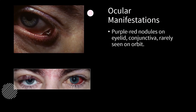Clinical presentations are purple-red nodules that develop on the eyelids or conjunctiva, and are rarely seen in the orbit. In early stages, Kaposi's sarcoma may be mistaken for a subconjunctival hemorrhage. Other ocular manifestations include visual field defects, lid disfiguration, entropion, and trichiasis. In one photograph, Kaposi's sarcoma is causing an entropion, and another image shows it in the conjunctiva taking the appearance of a subconjunctival hemorrhage, which can delay diagnosis.